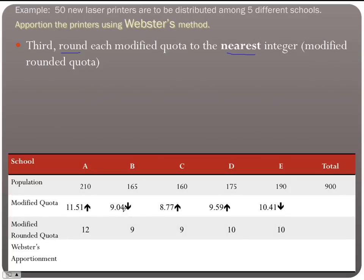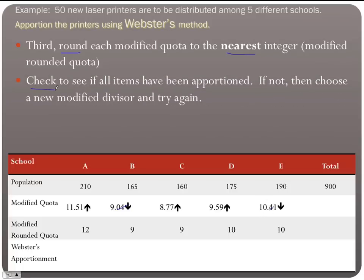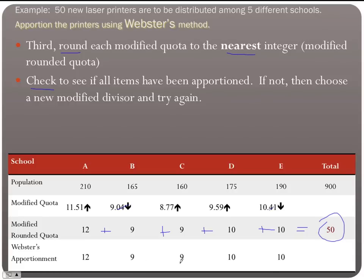Check: have all items been apportioned? Adding: 12 + 9 + 9 + 10 + 10 = 50. We chose a divisor that worked, so Webster's final apportionment is: A = 12, B = 9, C = 9, D = 10, E = 10.